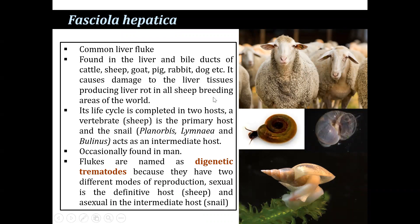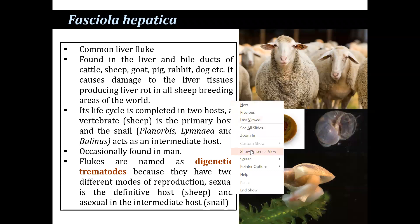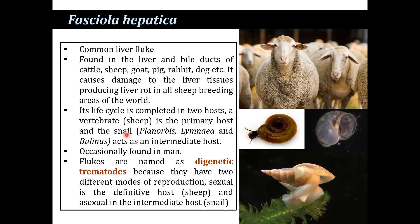Its life cycle is completed in two hosts: a vertebrate host, generally sheep, which is the primary host, and the snail — such as Planorbis, Limnaea, and Bulinus — that acts as an intermediate host. It is occasionally found in humans. Liver flukes are commonly named as digenetic trematodes as they have two different modes of reproduction: sexual reproduction occurring in the sheep as the definitive host, and larval development in the snail as the intermediate host.